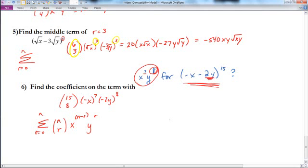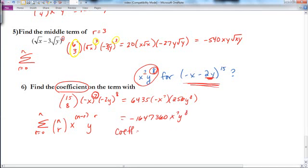So, now that I've figured out which term I'm dealing with, I can go ahead and expand this out. And, that would give me 6,435 times negative x to the 7th times 256 y to the 8th. And then, since I want to know the coefficient, I have to multiply all of these coefficient numbers to get negative 1,647,360 x to the 7th y to the 8th. So, my coefficient is negative 1,647,360.